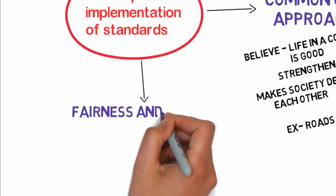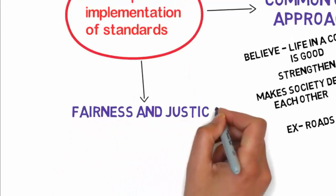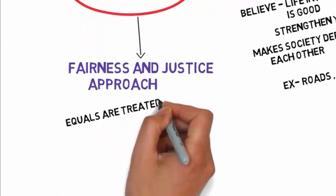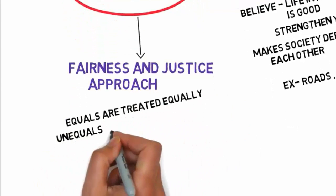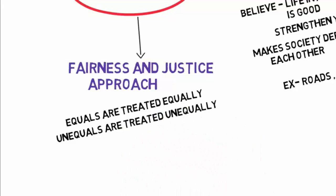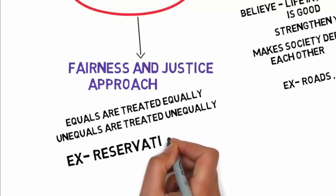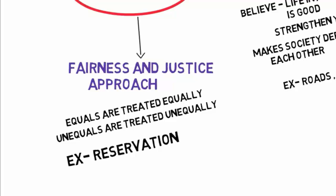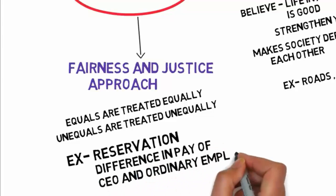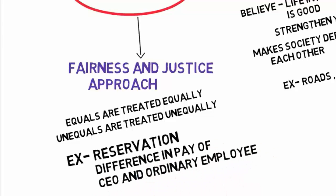Government departments also adopt the common good approach. The fourth one is the fairness and justice approach. In this approach, all equals are treated equally and all unequals are treated unequally. For example, reservations given only to minorities and backward classes, and differences in pay between a CEO and ordinary employees.